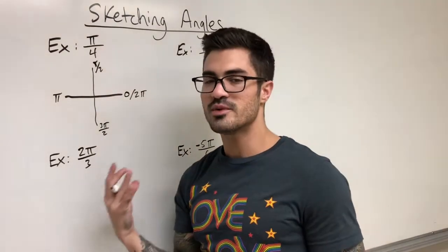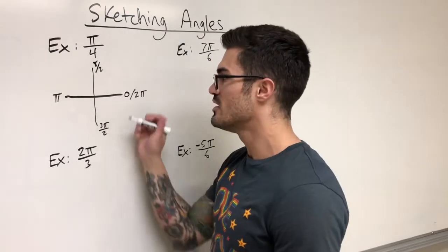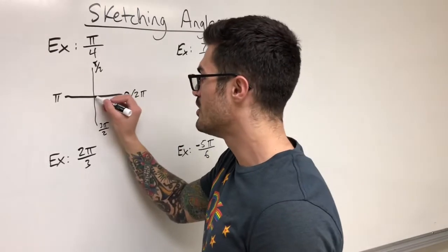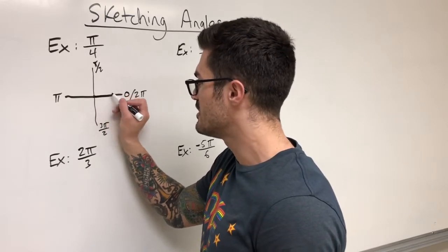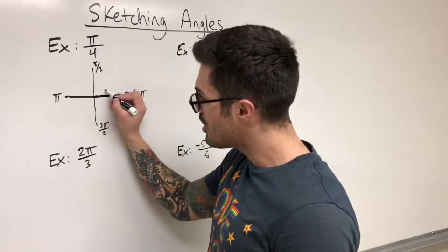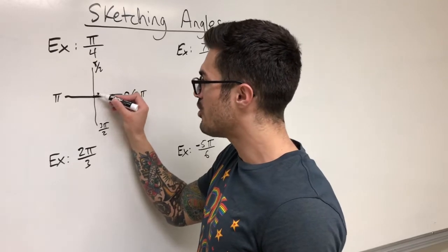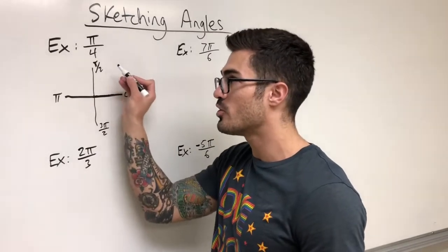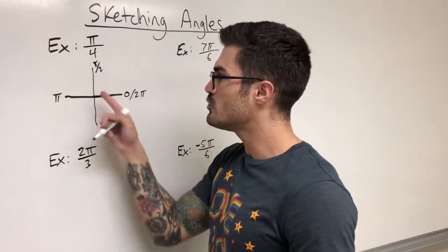So where is pi over four? First, what does standard position mean? We have what we call the initial side of the angle, which comes off to the right along the x-axis. To form our angle, we open up counterclockwise and stop at what we call the terminal side of the angle. That's how we form our angle.